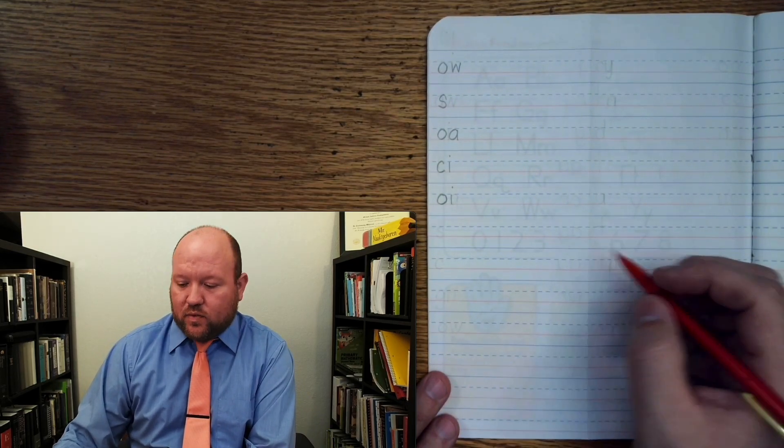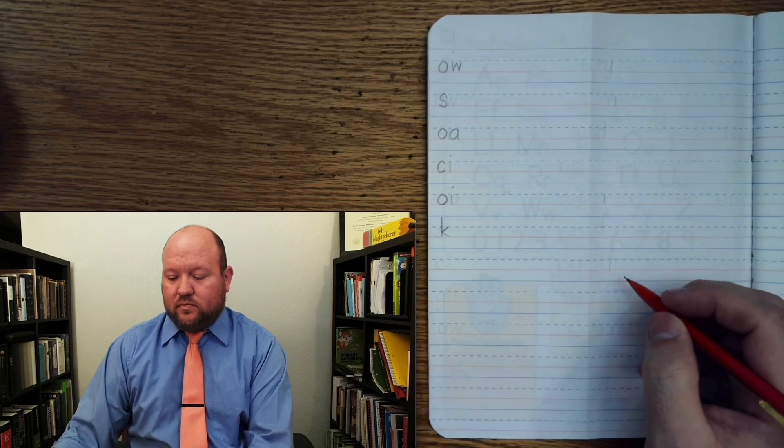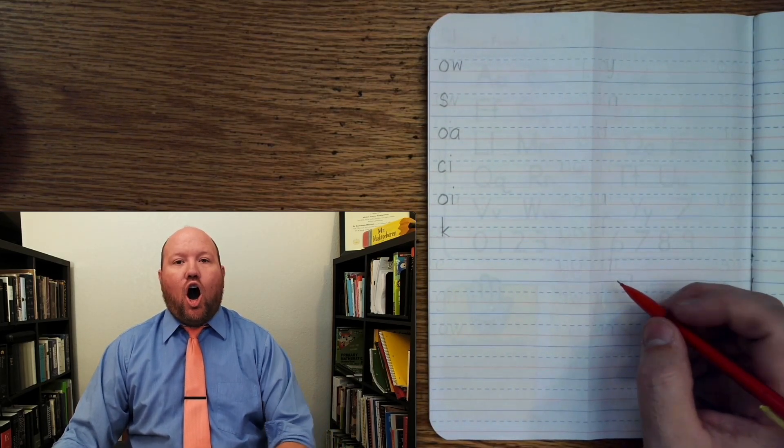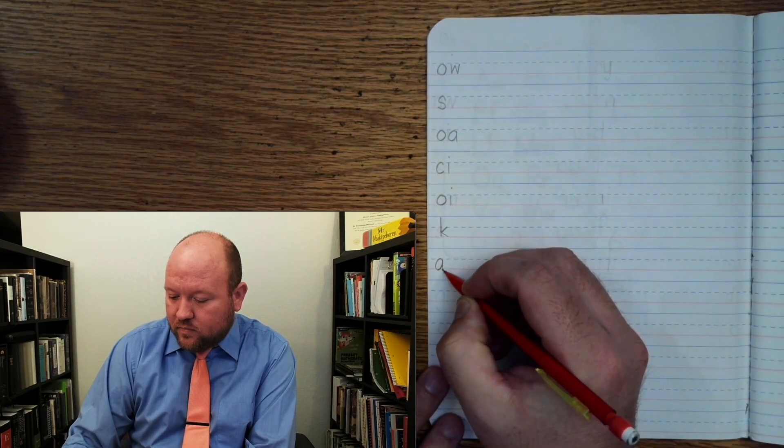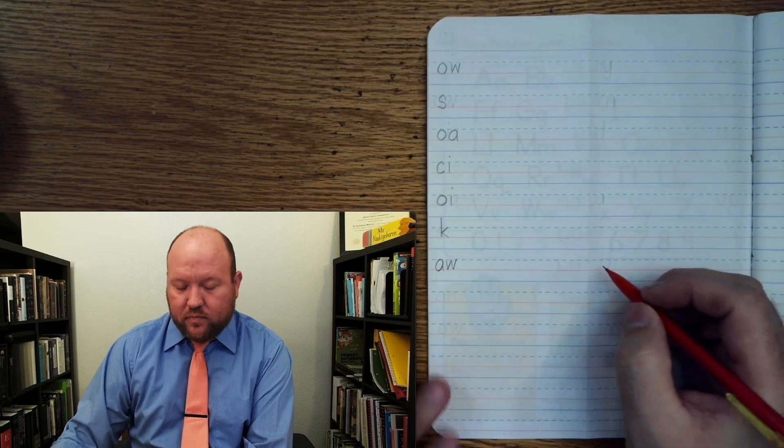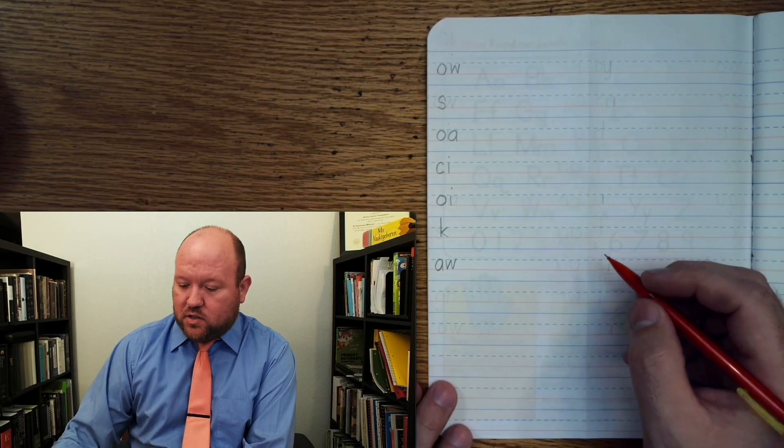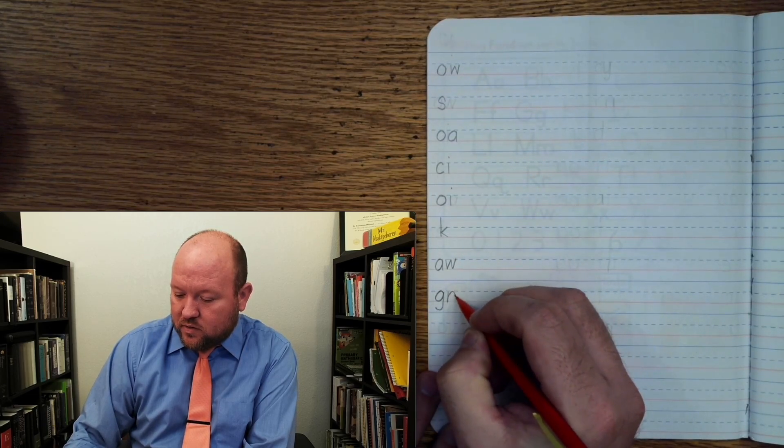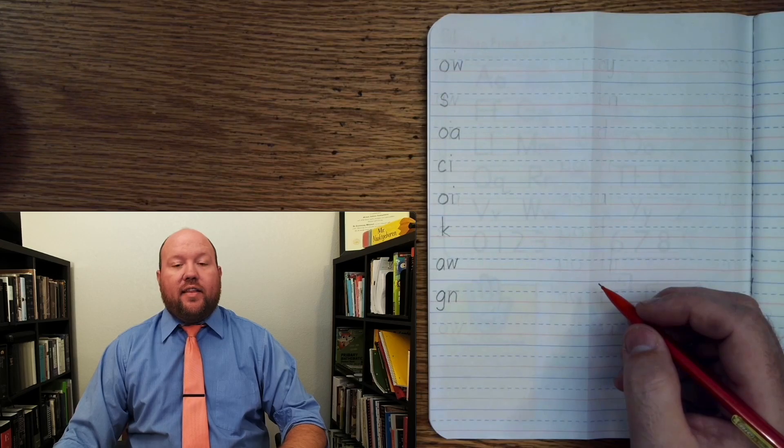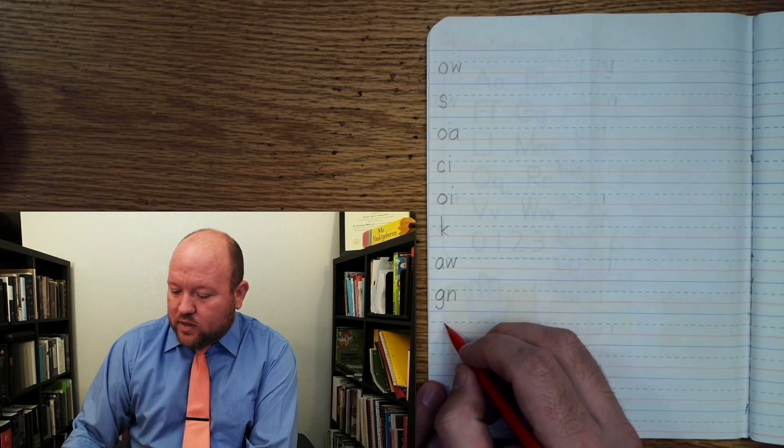K, k. The next one. Aw, aw. The next one. N, two letters. N, two letters. And the last one. K, s. K, s.